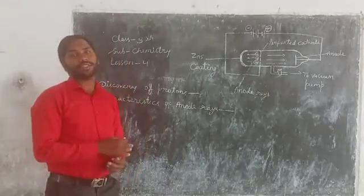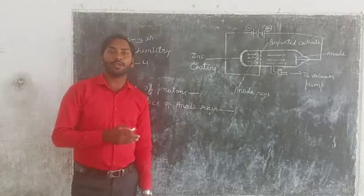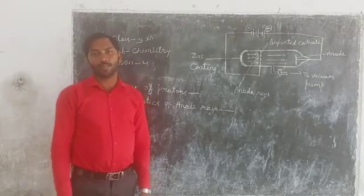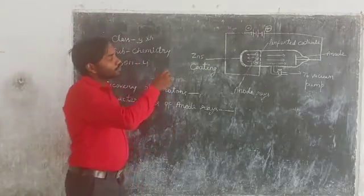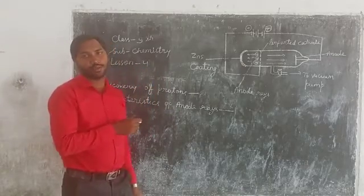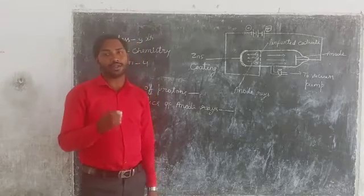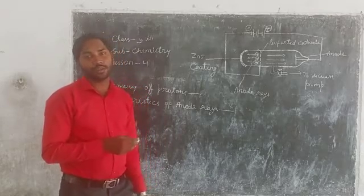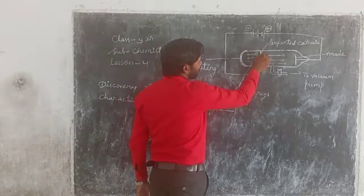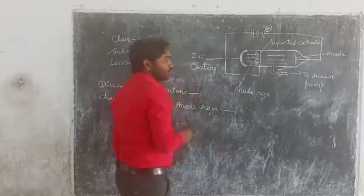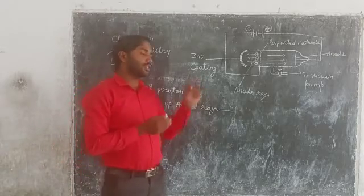J.J. Thompson, the scientist who discovered the electrons by performing the cathode rays. After his experiment, the German scientist E. Goldstein performed the same experiment. In his experiment, Goldstein modified the discharge tube. The Goldstein took the discharge tube with perforated cathode. As you can see here, there are holes in the cathode. And the hydrogen gas was created at low pressure in the discharge tube.